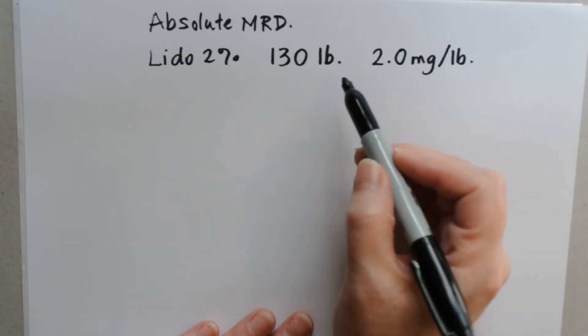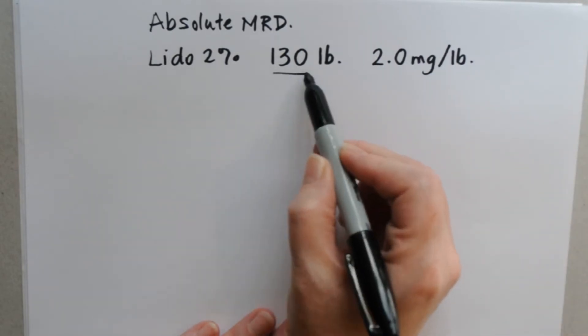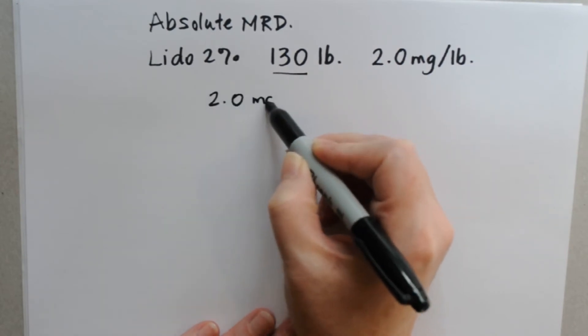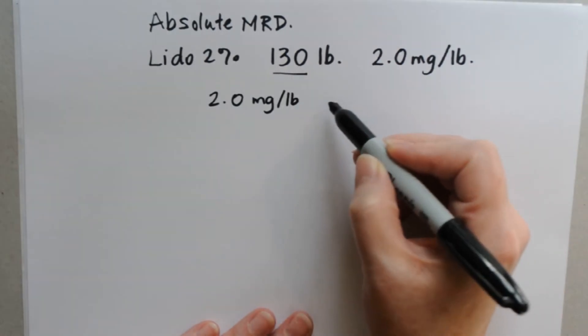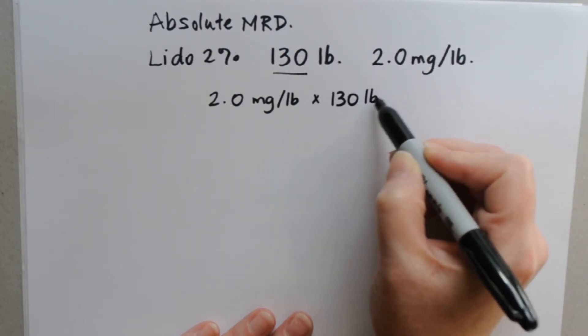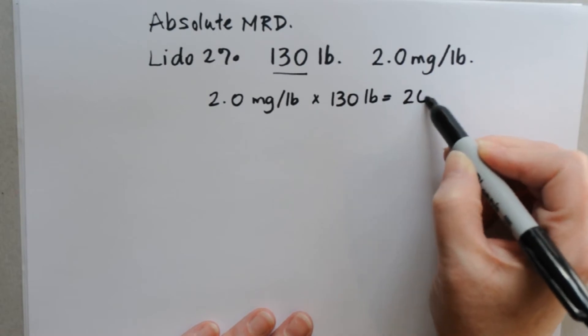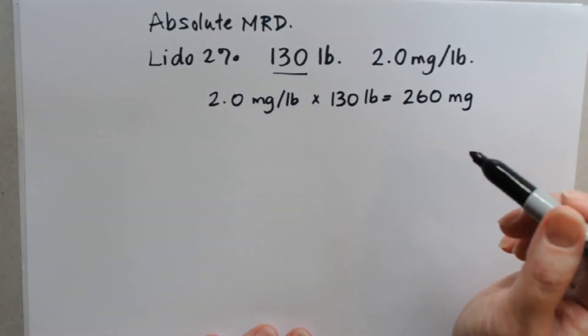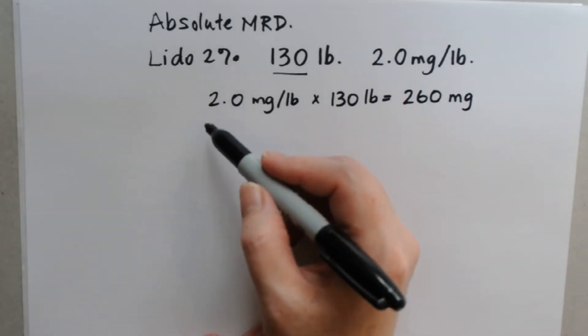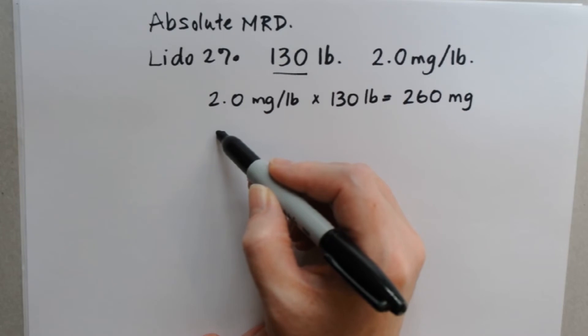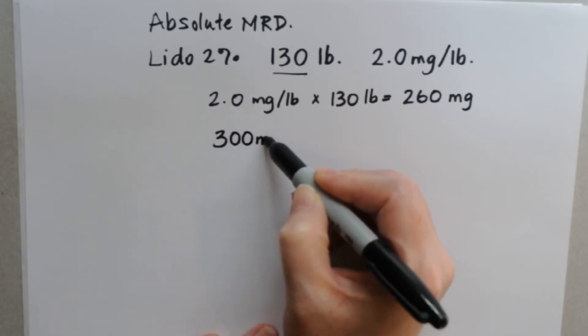So in order to figure out what the maximum dose for a 130-pound person is, we're going to multiply 2.0 milligrams per pound times the number of pounds they are, and we're going to get 260 milligrams as their maximum dose. Now there's also an absolute maximum dose, and that is for lidocaine 300 milligrams.